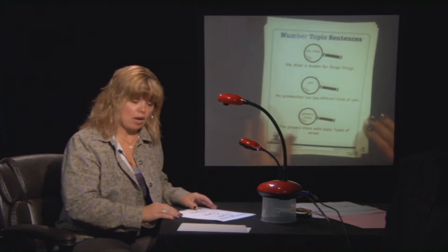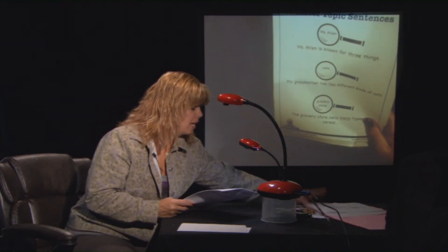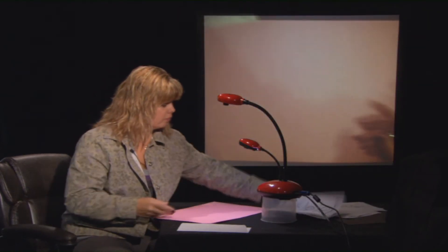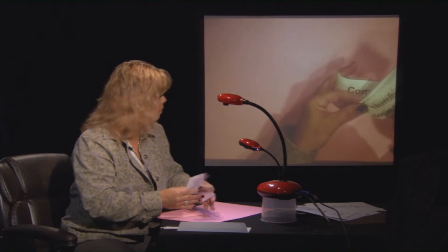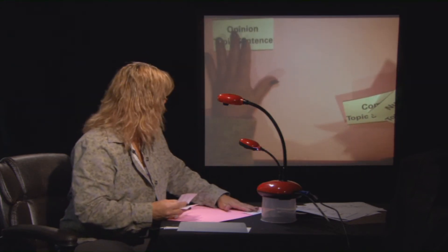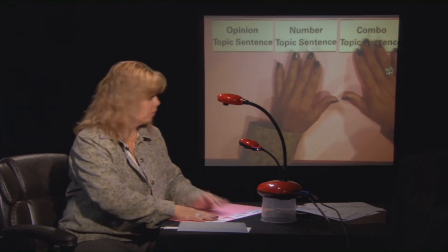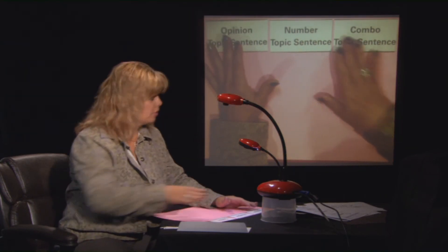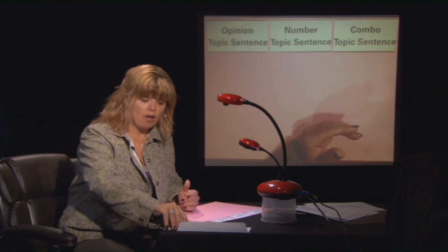We're going to take those three different types of topic sentences and we're going to play a little game. First of all, we're going to take our work mat and put it in front of us. On the top of our work mat, we're going to give three different titles for our topic sentences: the opinion topic sentence first, then the number topic sentence, and then the combo third. We're going to read some sentences and try to sort them out and see which category — number, opinion, or combo — they fall under.